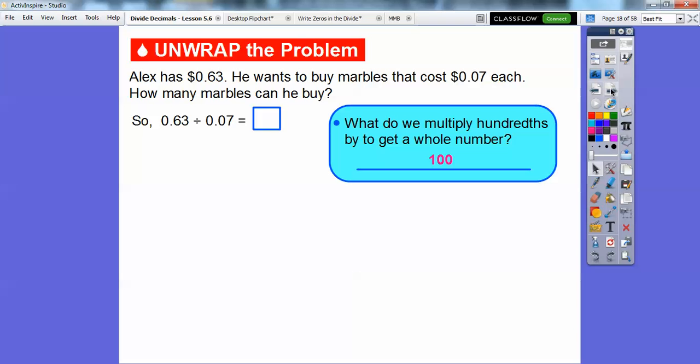So we're going to figure out what's 0.63 divided by 0.07. So let's multiply both of those by 100 and we get 63 divided by 7. And if we know our division reasonably well, that's going to give us 9. So if this one's 9, so is this one right here. So let's answer the question right here. Alex can buy 9 marbles.